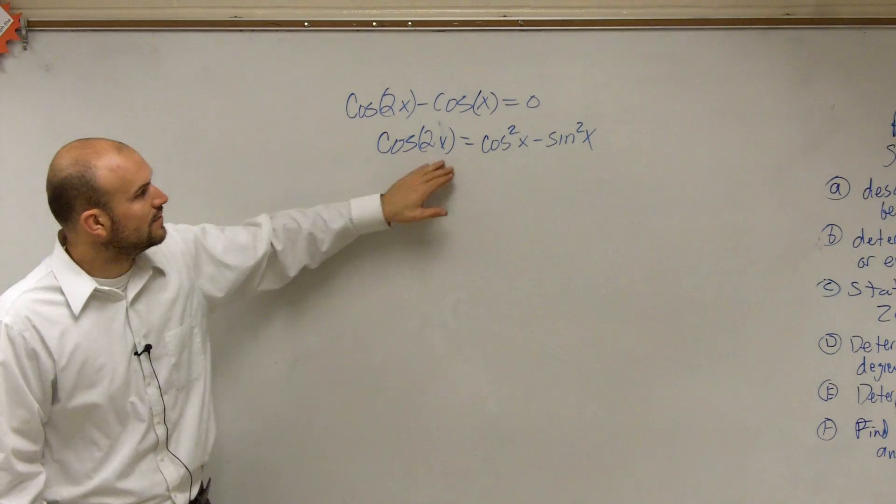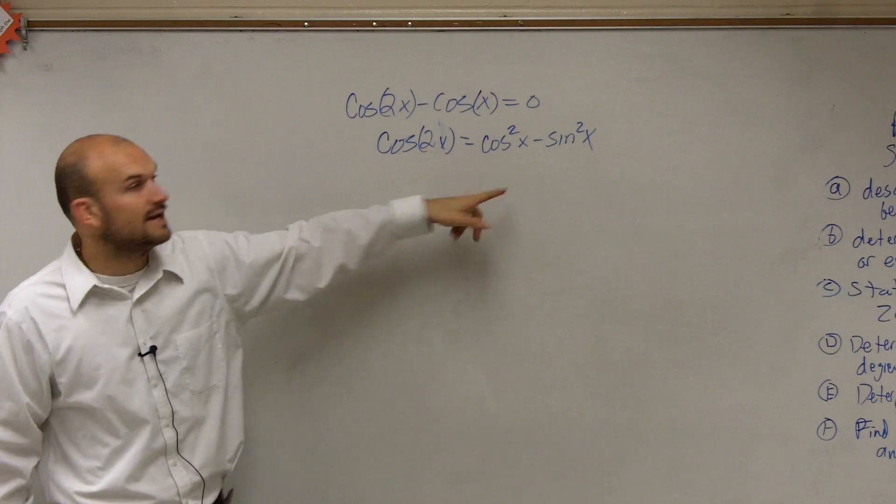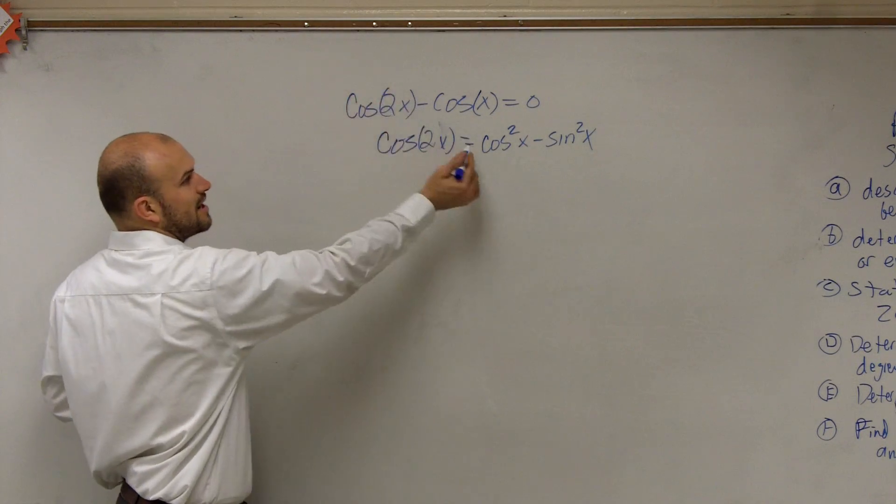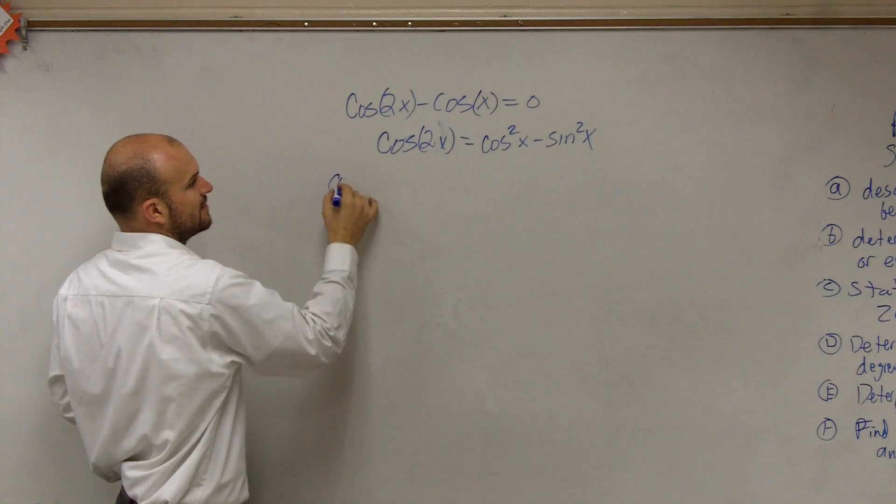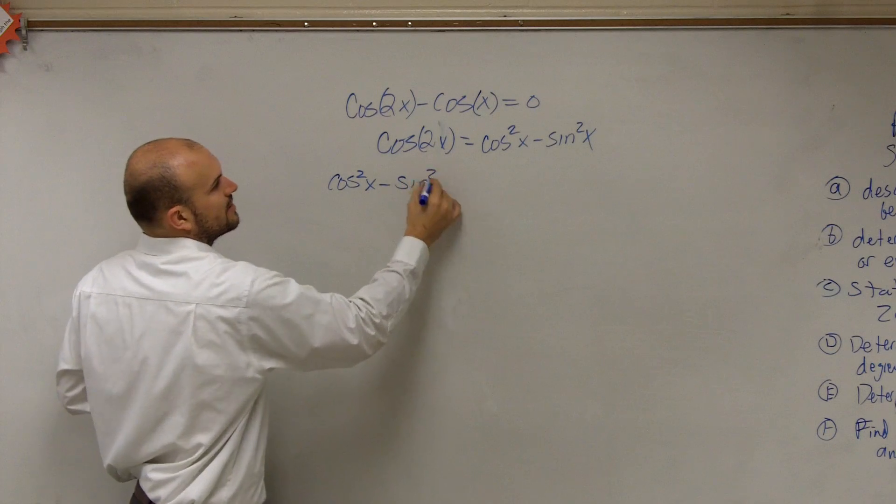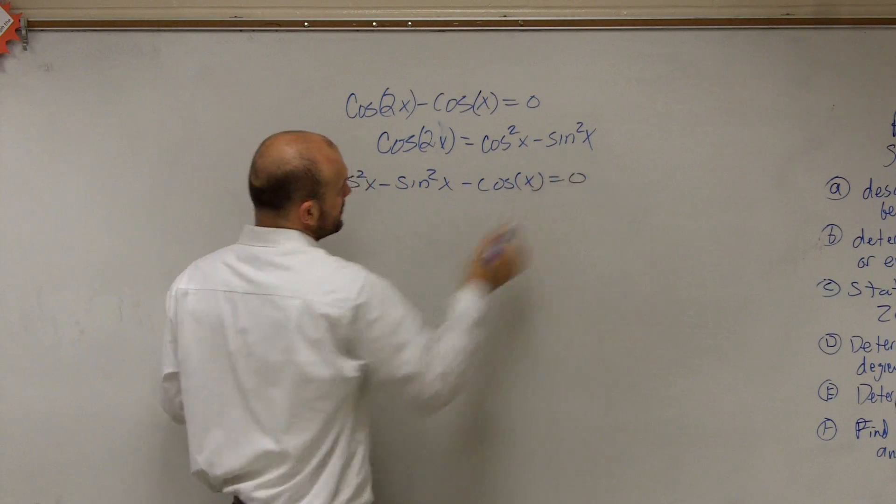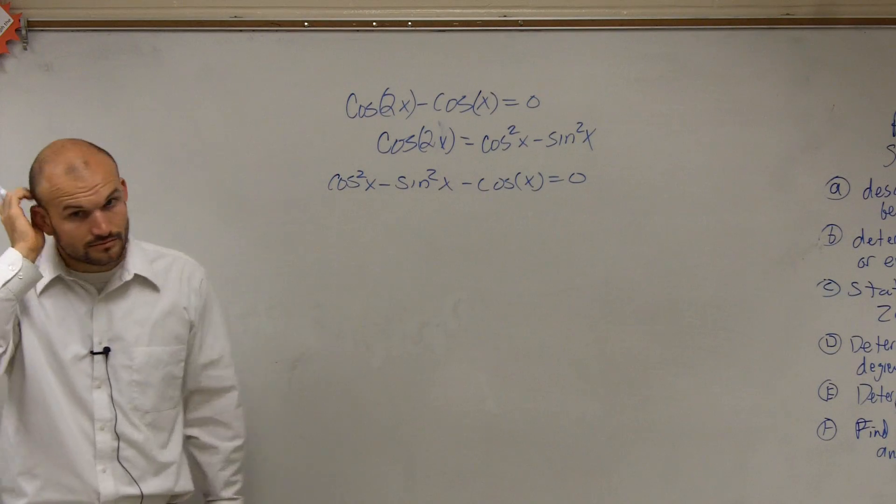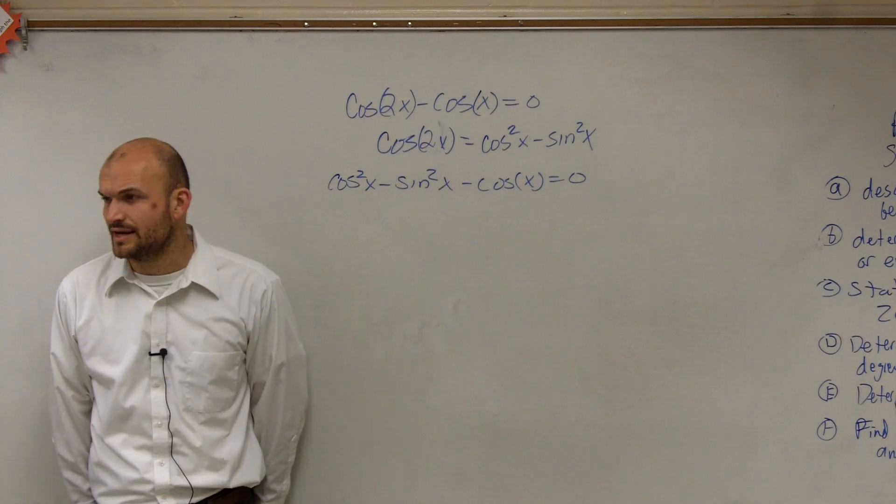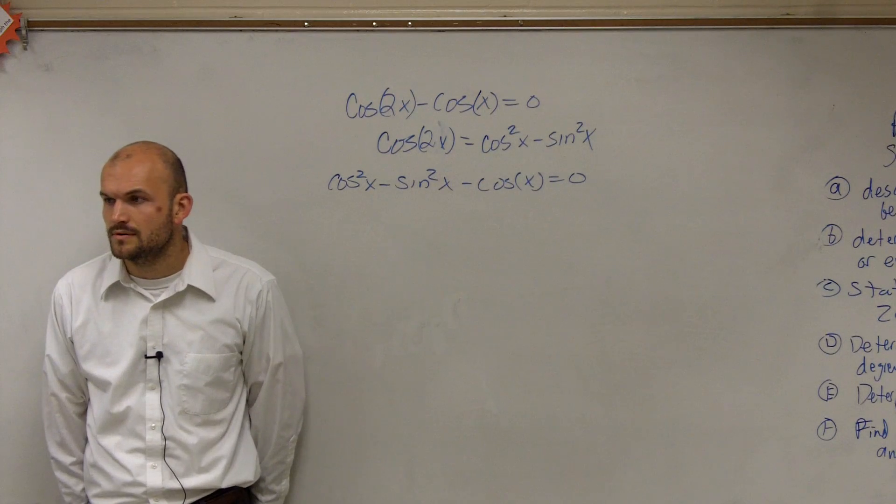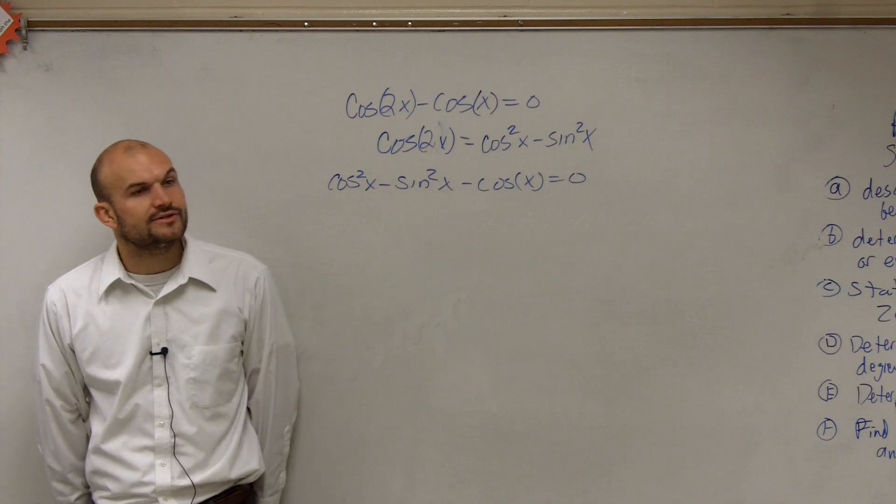The first thing we need to look at, though, is if I plug this in, what I want you guys to understand is cosine of 2x. If this equals that, now what I'm going to do is, I'm going to plug this in for my formula. So now I have cosine squared of x minus sine squared of x minus cosine of x equals 0. So does everybody see what I did?